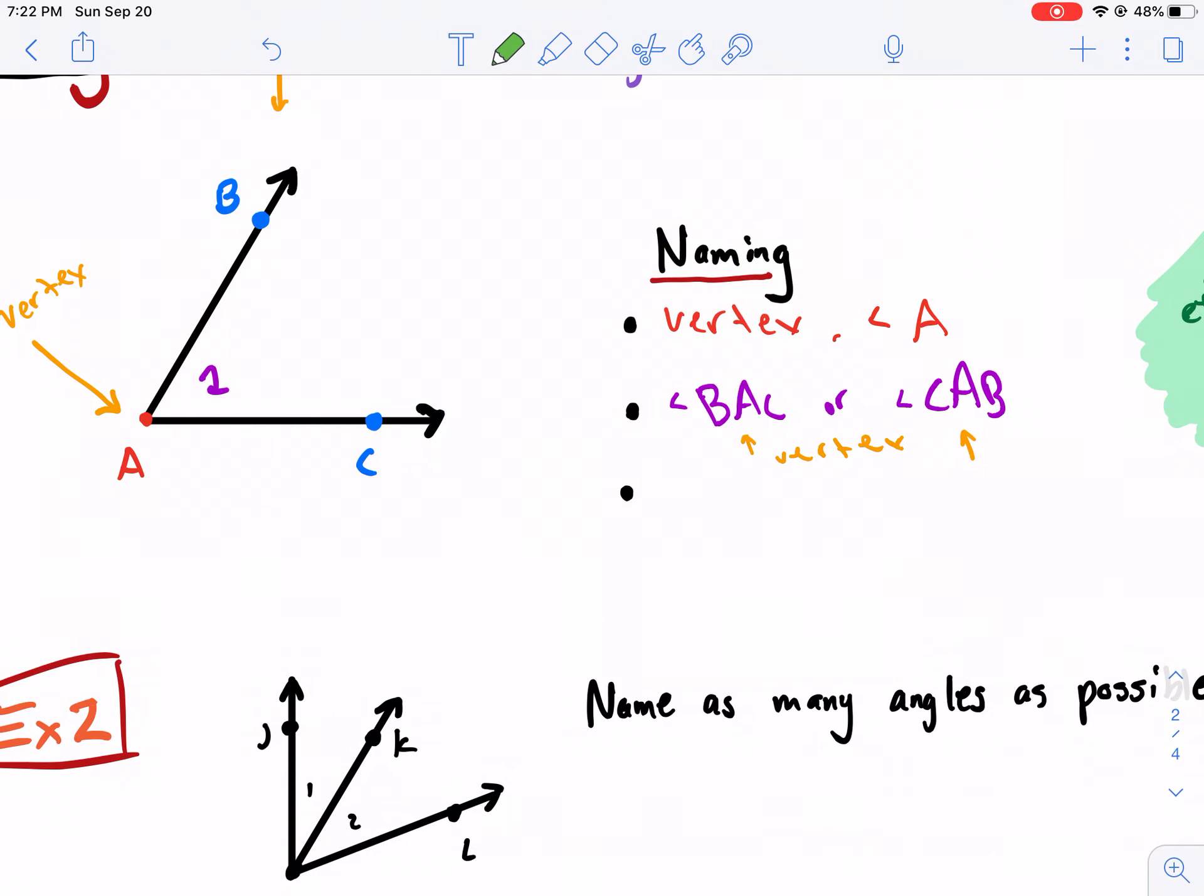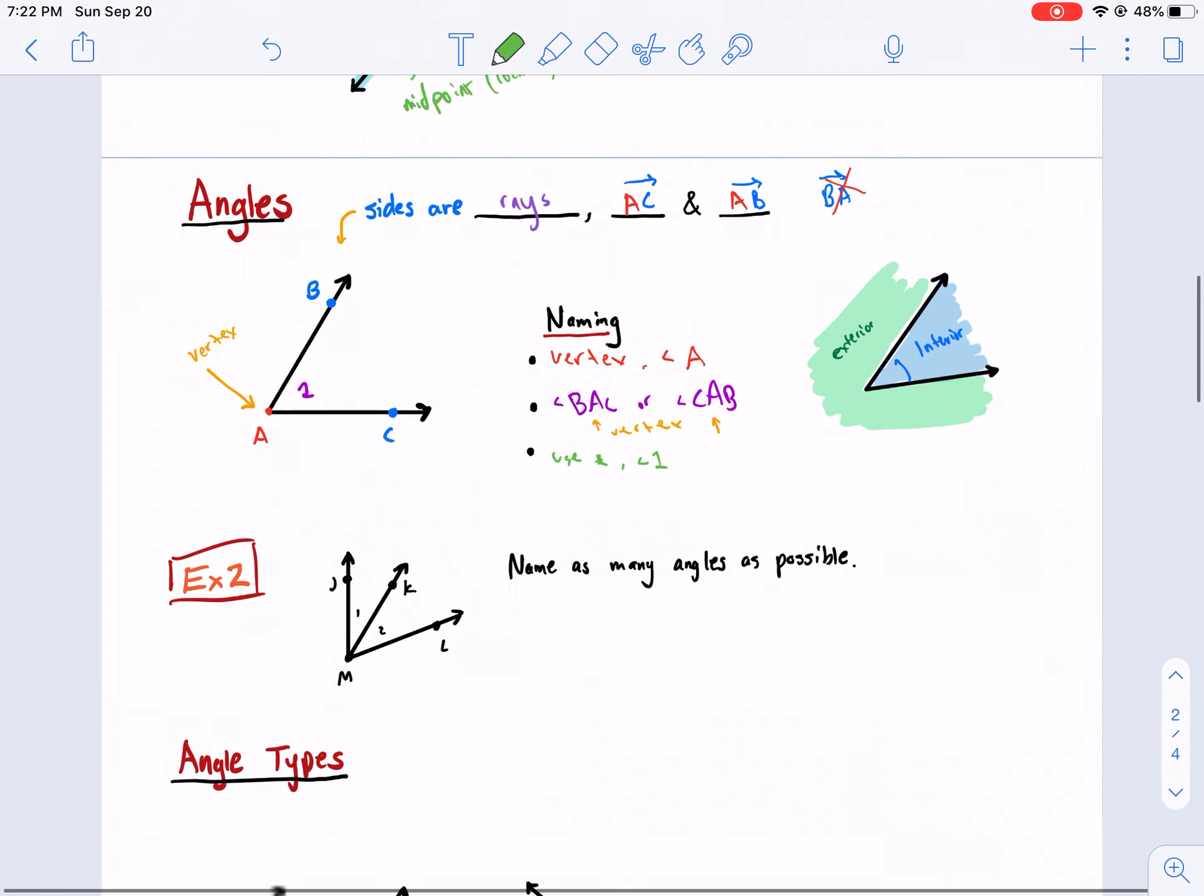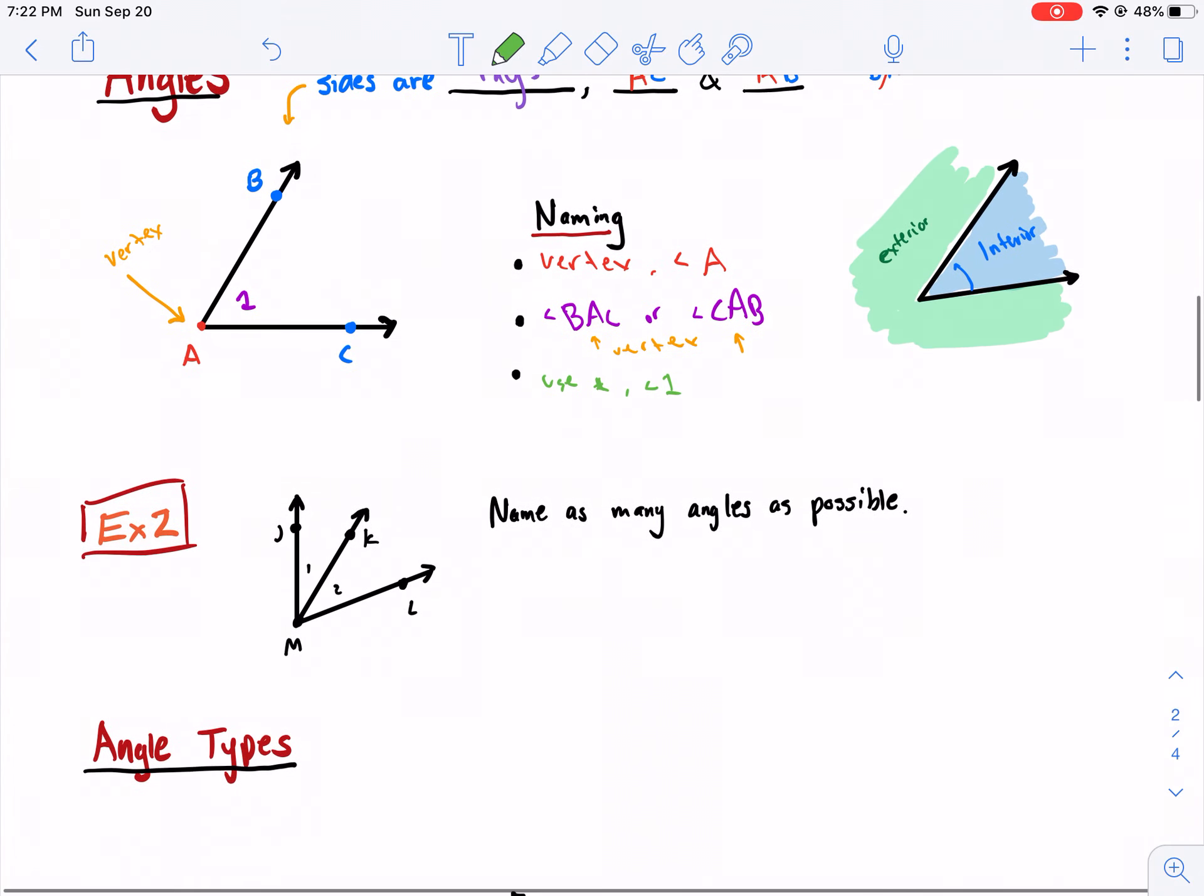And the last one is to use a number. So if there's an angle that's numbered, you can use the number. So in this case, it would be angle one. And it's not very common that angles are measured like that, but it's just something to consider.